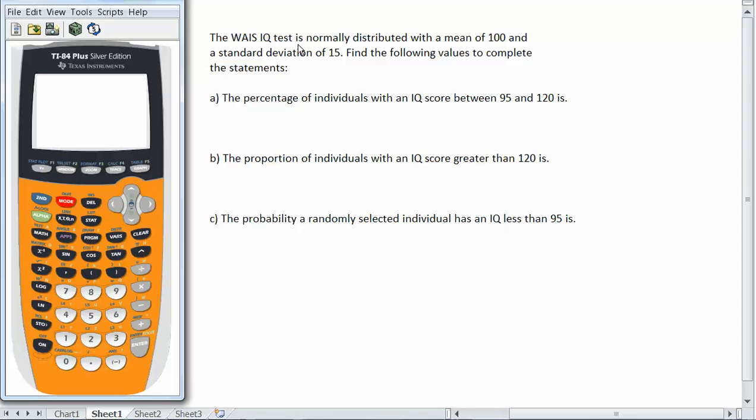The WAIS IQ test is normally distributed with a mean of 100 and a standard deviation of 15. Find the following values to complete the statements.